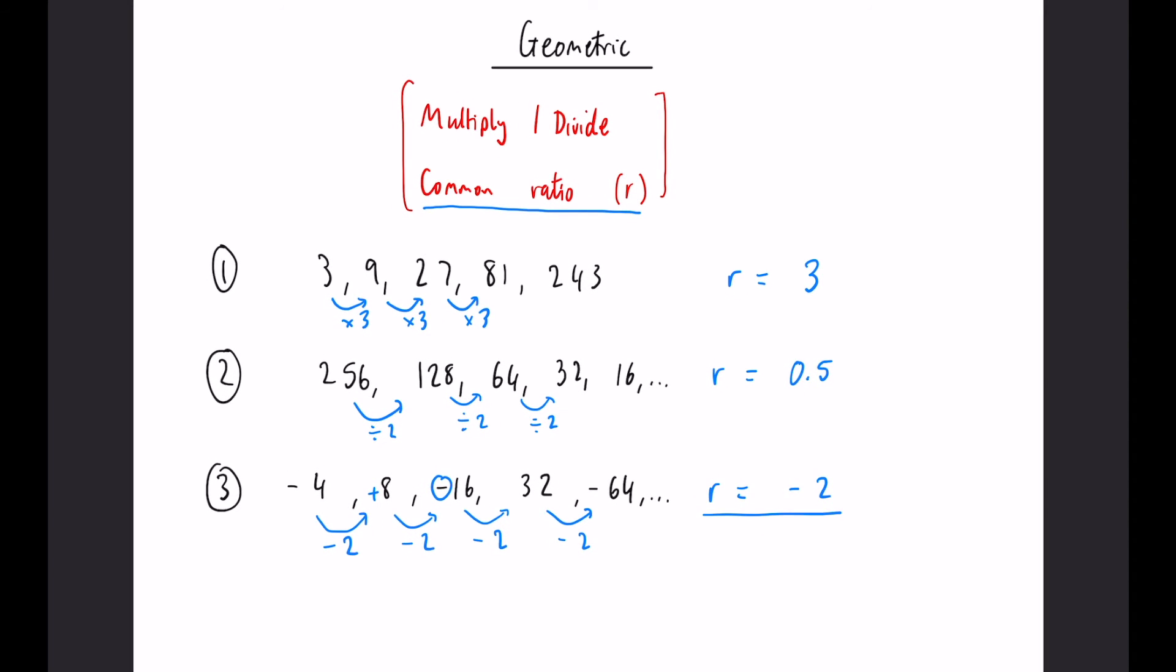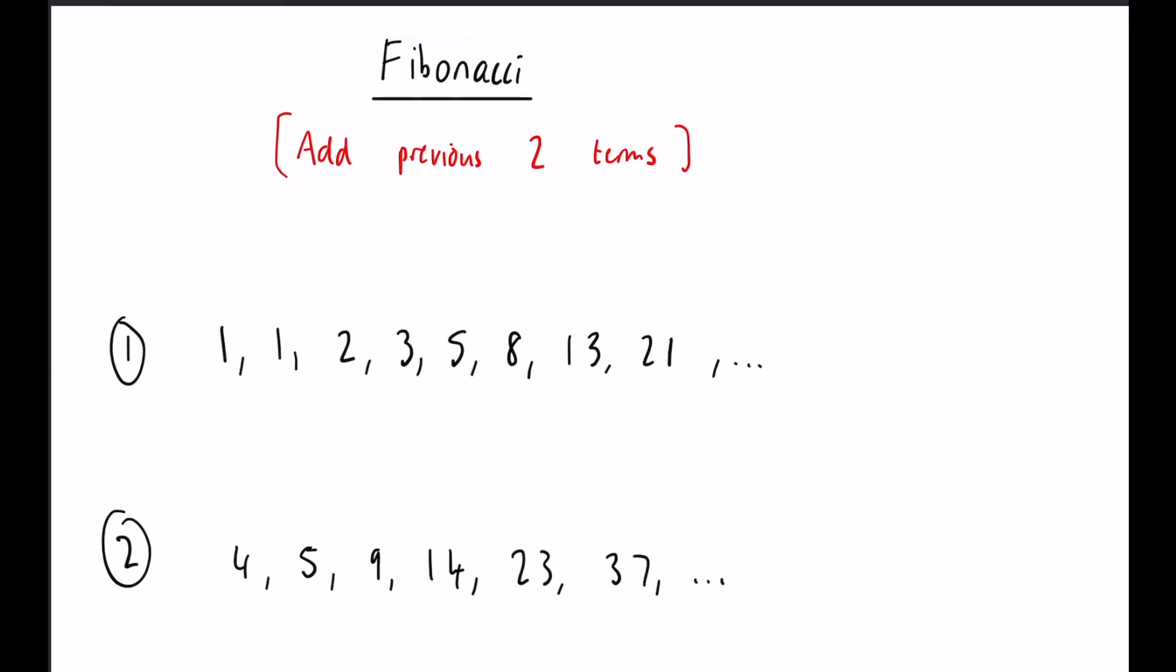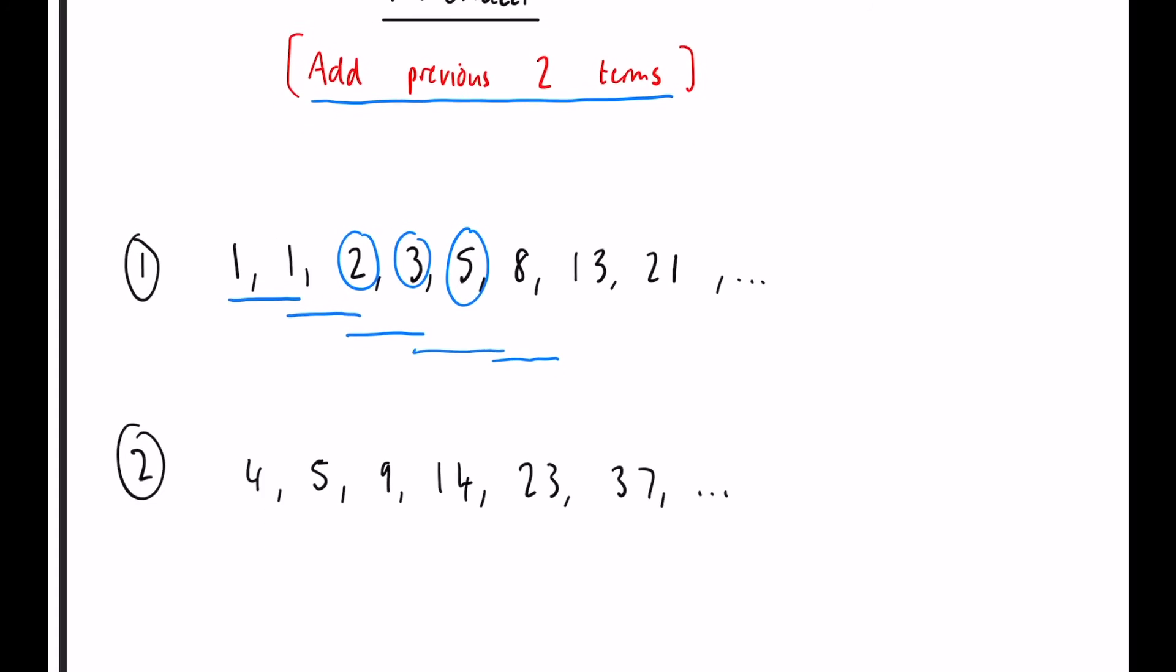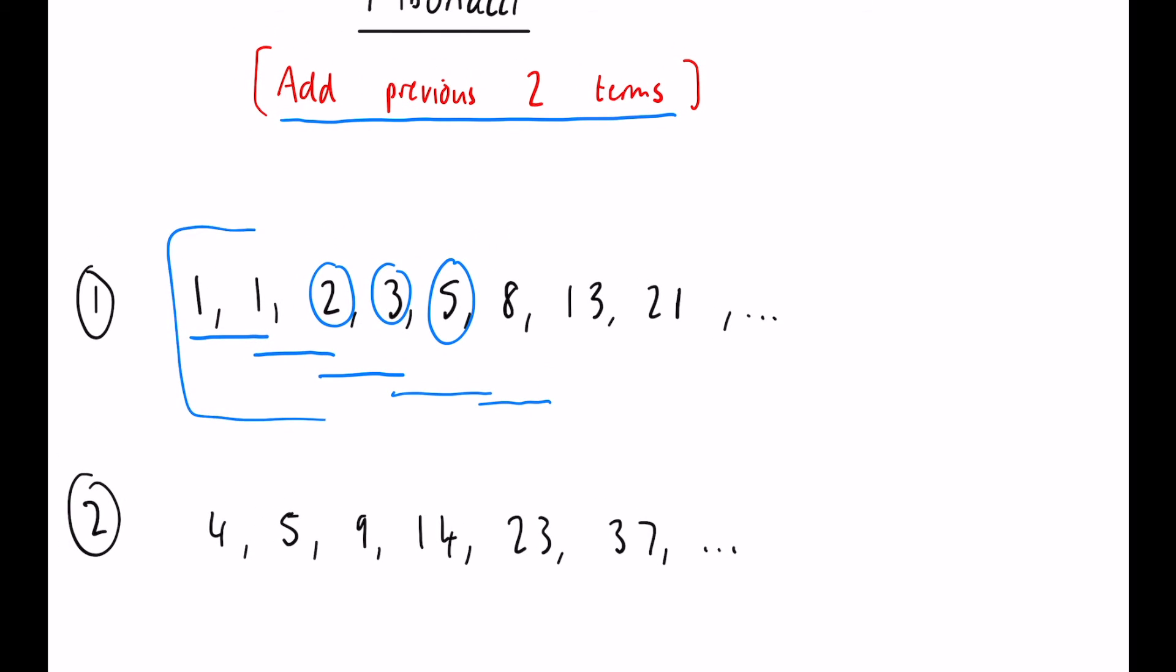Now finally, we have the Fibonacci sequences. The main rule for a Fibonacci sequence is you add the previous two terms to get the next one. So for example, 1 add 1 makes 2, 1 add 2 makes 3, 2 add 3 makes 5, and so on. These are infinite sequences that will go on and on and they will never reach an end. You can imagine the numbers will get very big very quickly. This is the most standard type of Fibonacci where you start at 1 and 1 at the beginning.